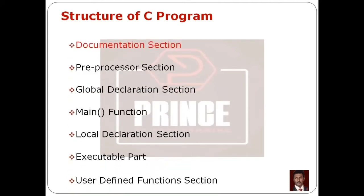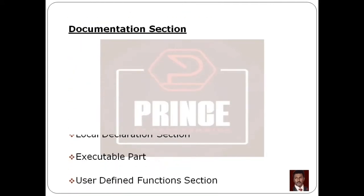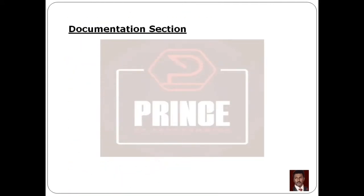The first one is the Documentation section. In the Documentation section, we will talk about the description of the program using comment lines. Comment lines are used to describe the program. The first type is a single line comment, which uses double forward slash. For example: 'This program is used to print the word hello.'